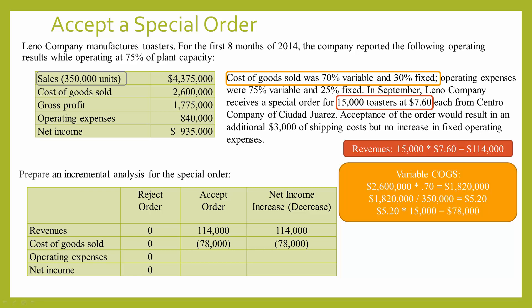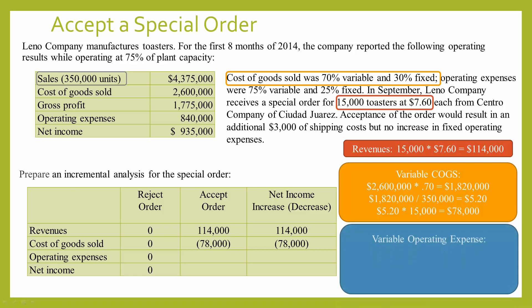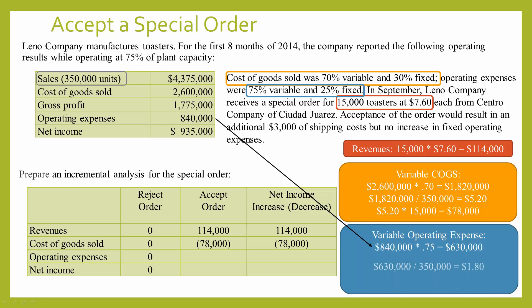Now we do the same for operating expenses. Operating expenses are 75% variable and 25% fixed. We take the current operating expenses of $840,000 and multiply by 75% to get total variable expenses of $630,000. Dividing by 350,000 units gives a variable operating expense per unit of $1.80. For the special order of 15,000 toasters, variable operating expenses come to $27,000.